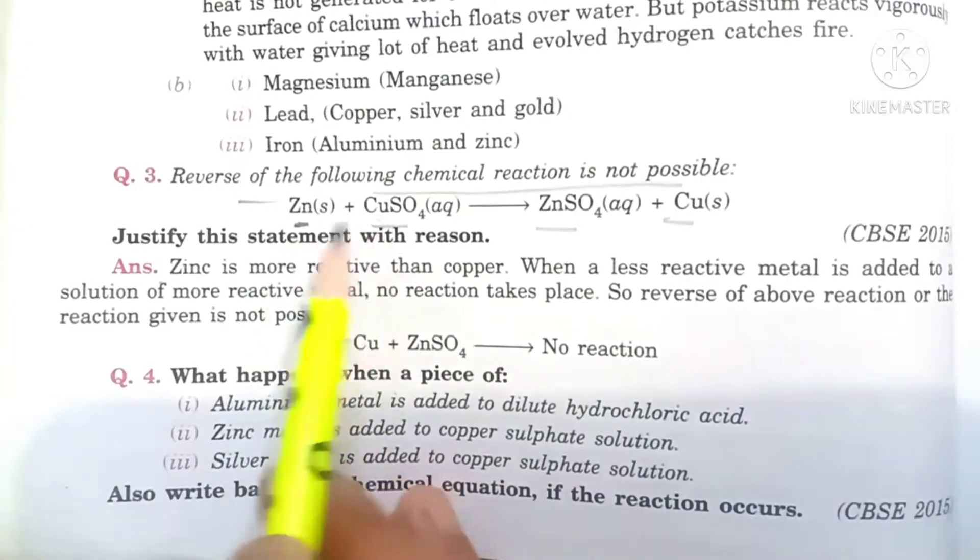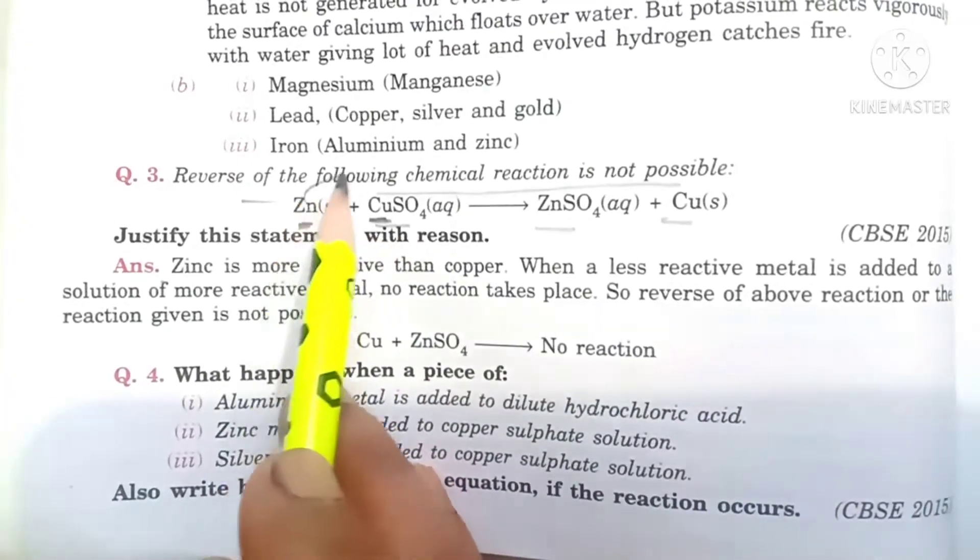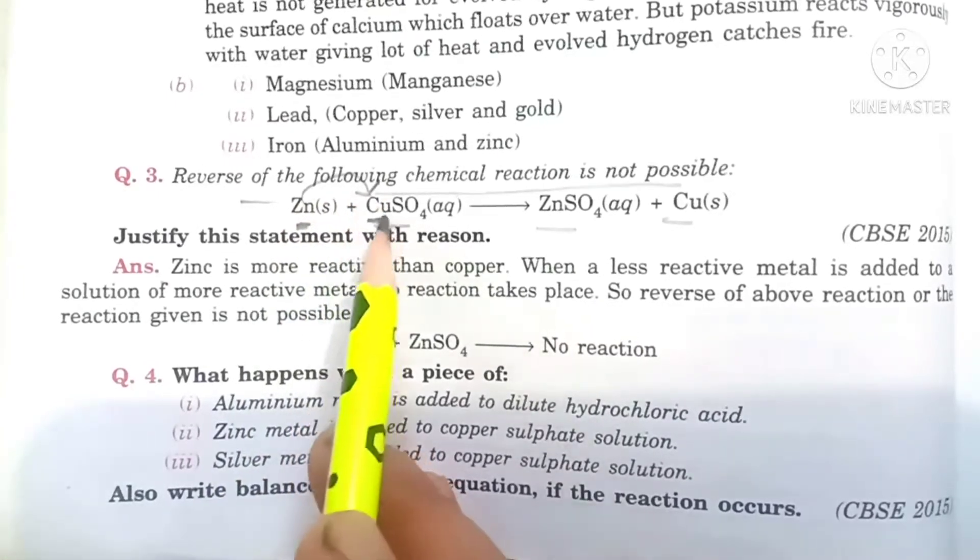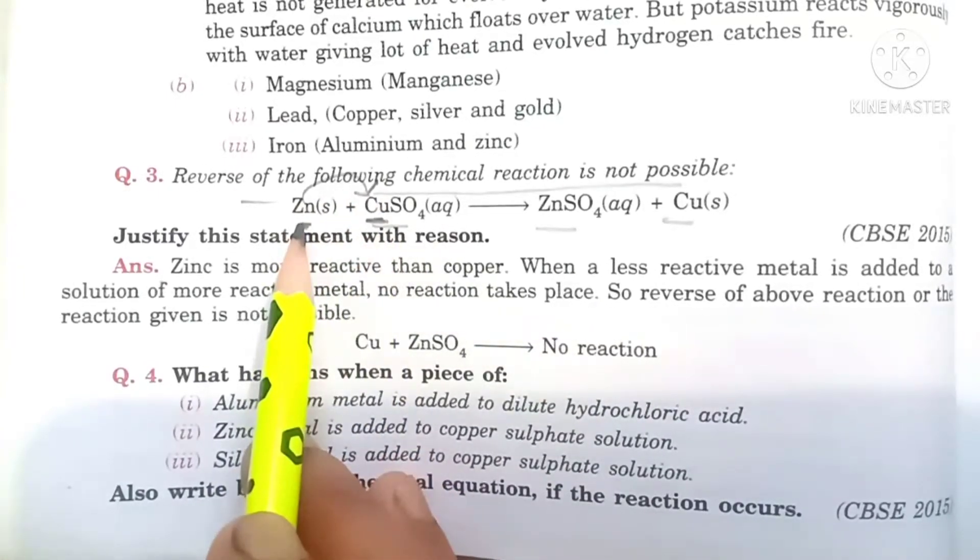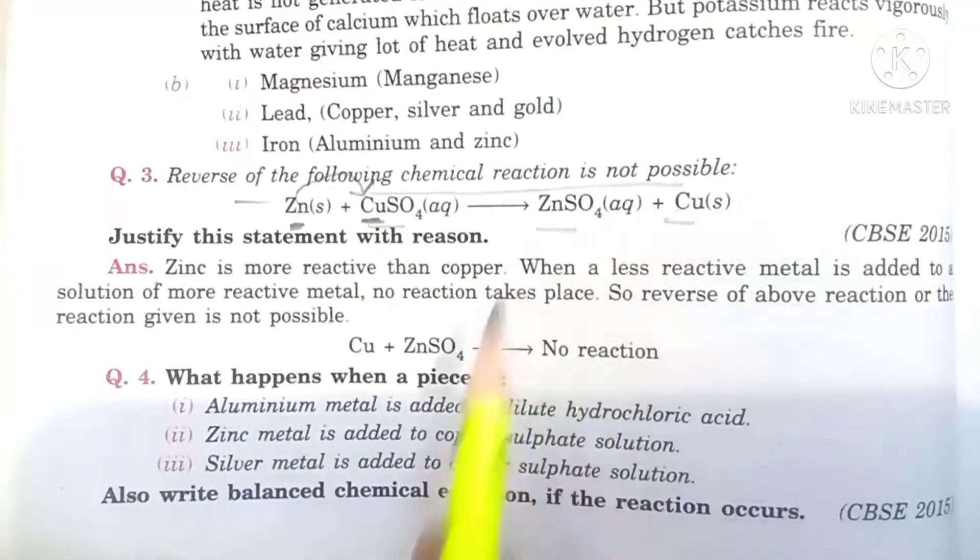If we go to the activity series, zinc is more reactive than copper. Zinc will displace the copper. Zinc will displace copper because zinc is more reactive than copper, so zinc sulfate plus copper will form.